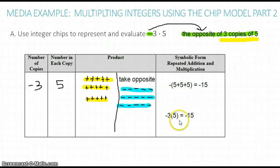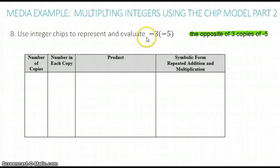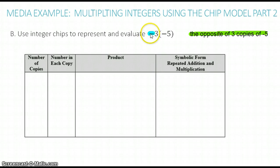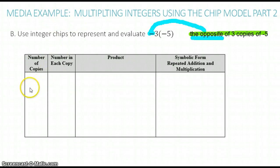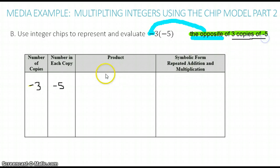So negative 3 times 5 equals negative 15. Let's look at the next example. Now we have negative 3 times negative 5. So we're going to think of this as the opposite of 3 copies of negative 5. This negative symbol — instead of negative 3 copies — we're going to think of it as the opposite of the three copies of negative 5. So let's fill in our chart. Our number of copies is negative 3, and the number in each copy is negative 5.